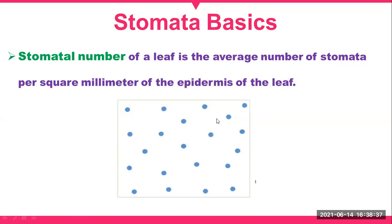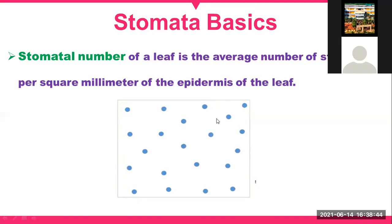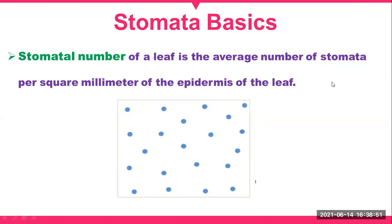Stomatal number is the average number of stomata per square millimeter of the epidermis of the leaf. We are checking how many stomata are present in a particular area — generally one square millimeter. So if the count is 20, then the stomatal number will be 20 for one square millimeter area.